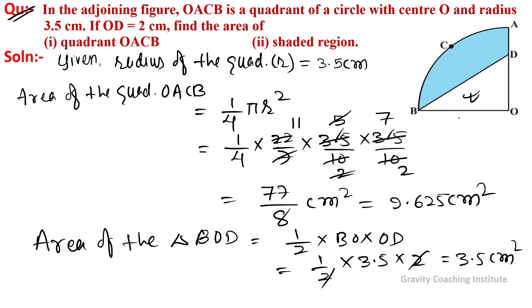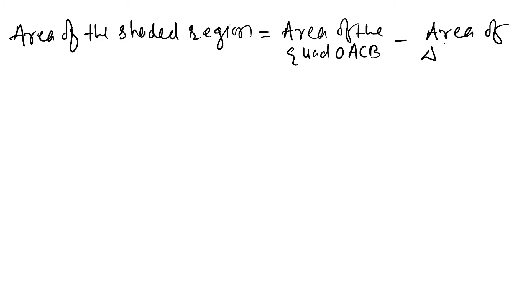Now we subtract the quadrant minus the triangle area to find the shaded region. Area of the shaded region equals area of the quadrant minus area of triangle BOD. So it equals 77 upon 8 minus the area of triangle BOD which is 3.5.